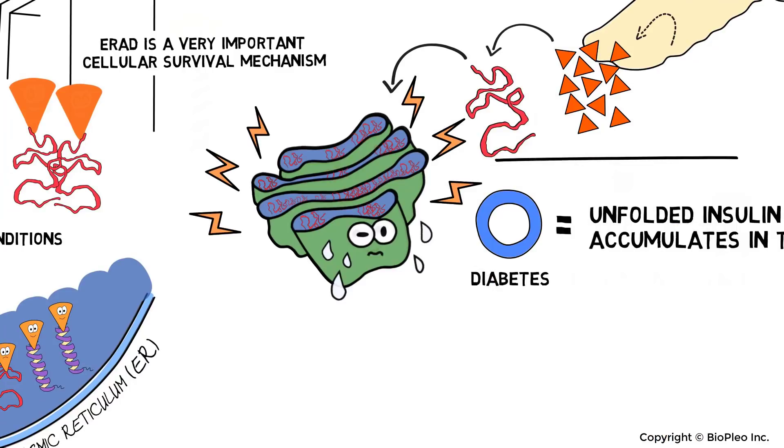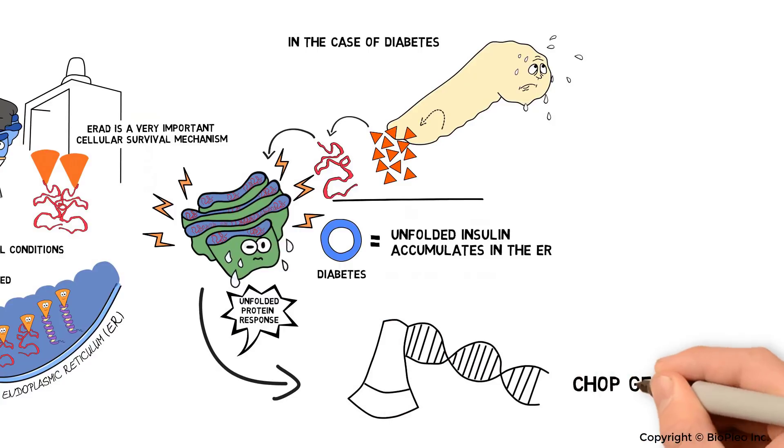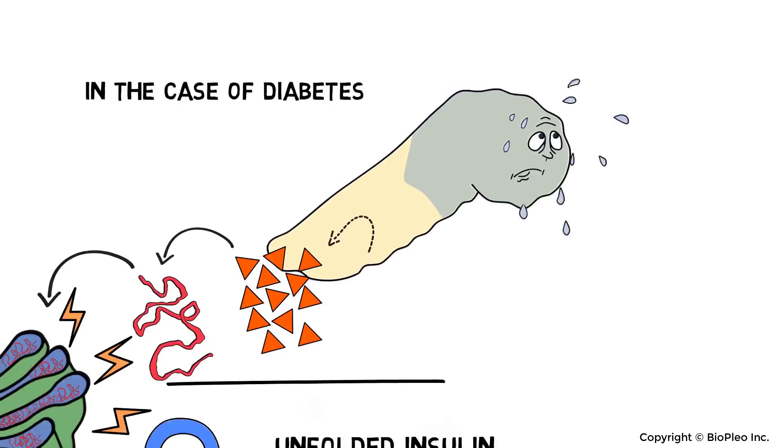Once this occurs, the stress level in the ER increases, which activates the unfolded protein response and signals a gene called CHOP to kill the beta cells.